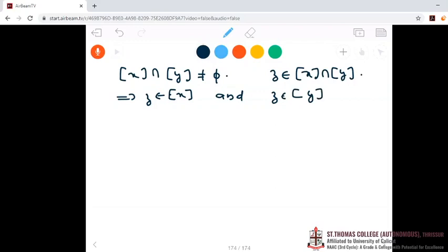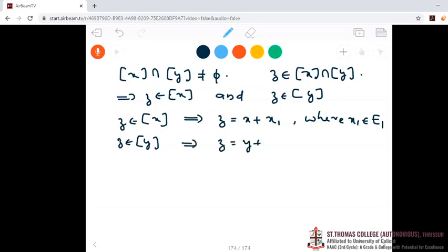If Z is in class X, we can write Z as X plus some X1 where this X1 is an element of E1. Similarly, Z is an element of class Y implies we can express Z as Y plus some Y1 where this Y1 is also an element of E1. Then both of them are Z, so we can say that X plus X1 is same as Y plus Y1, and this implies X minus Y equal to Y1 minus X1.